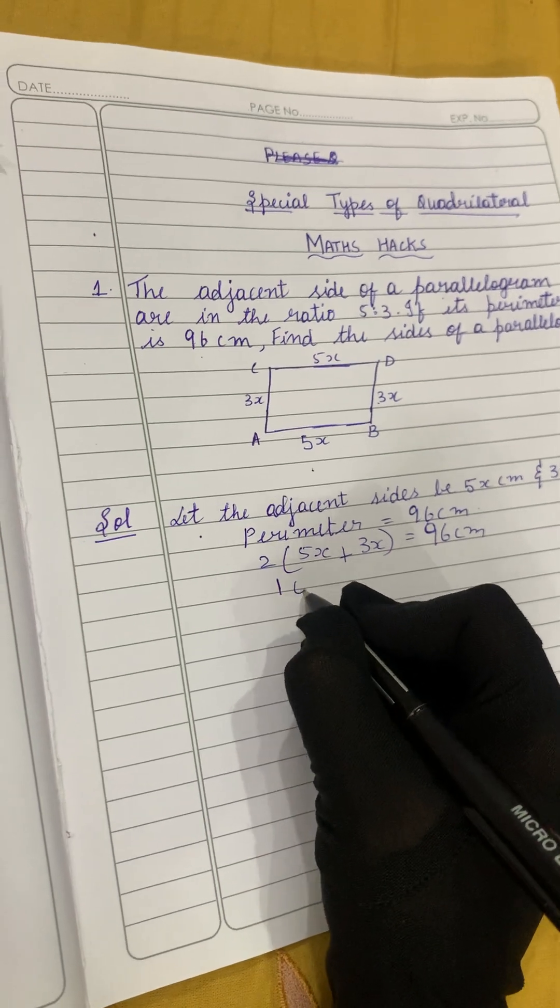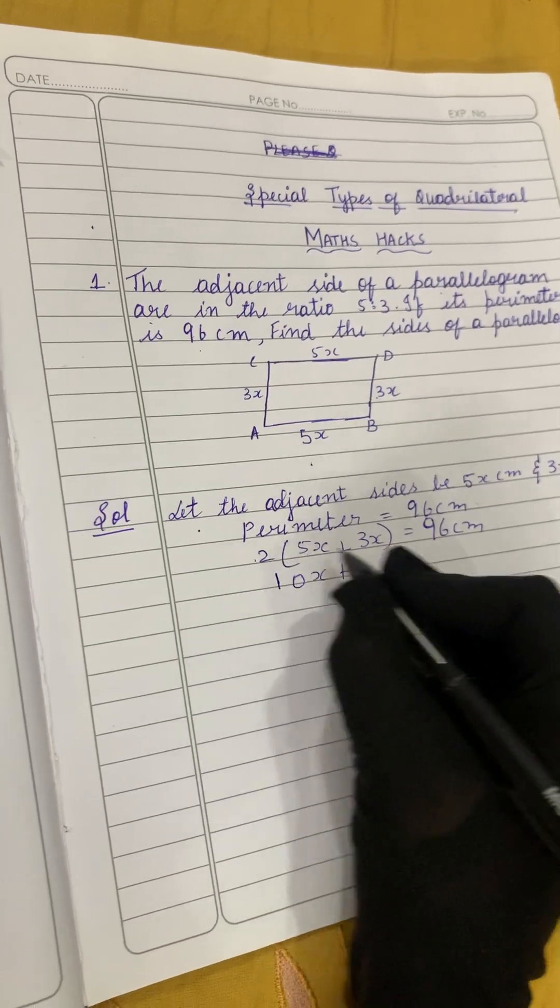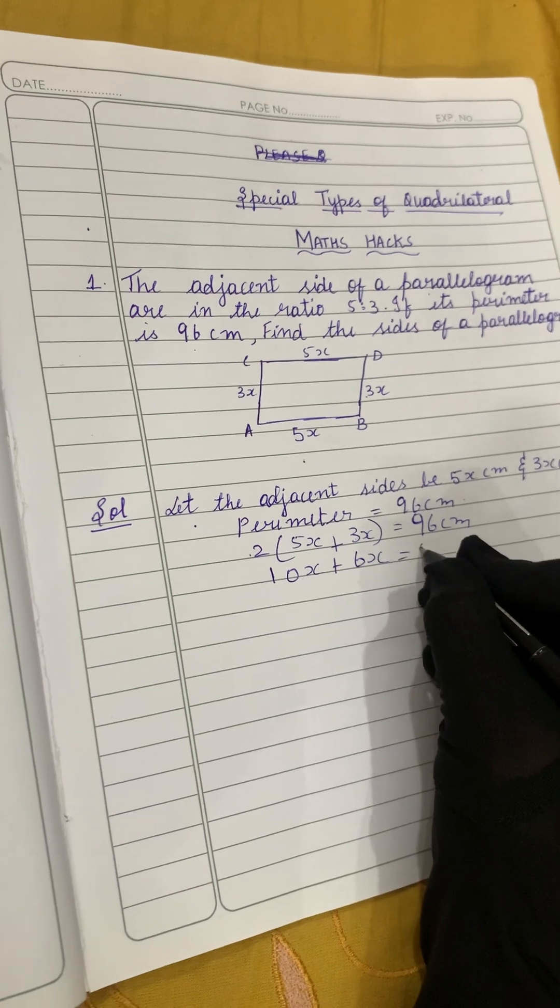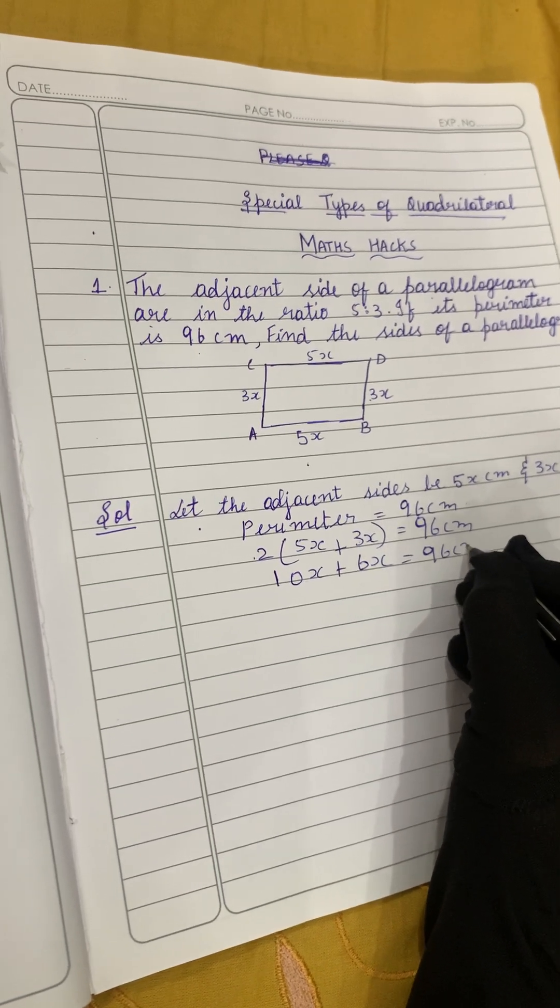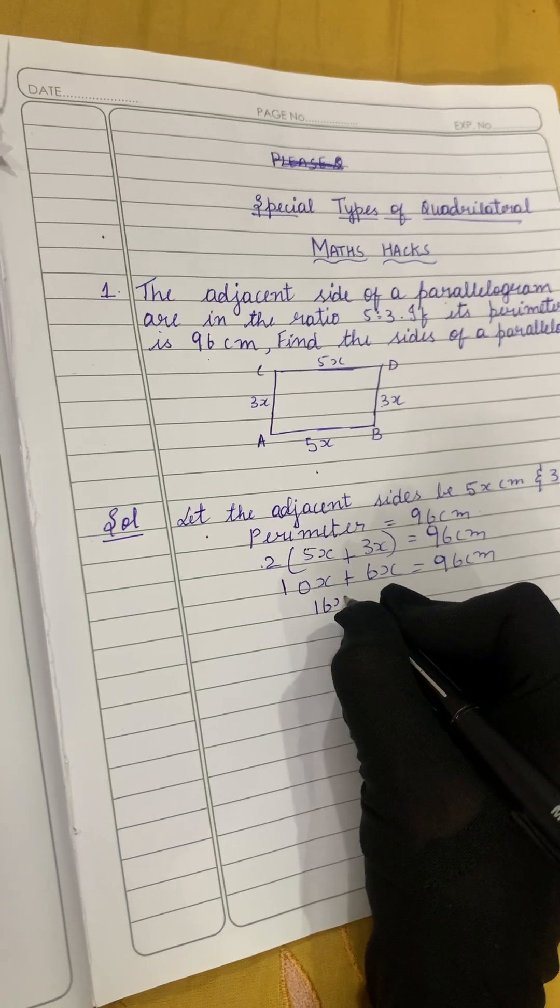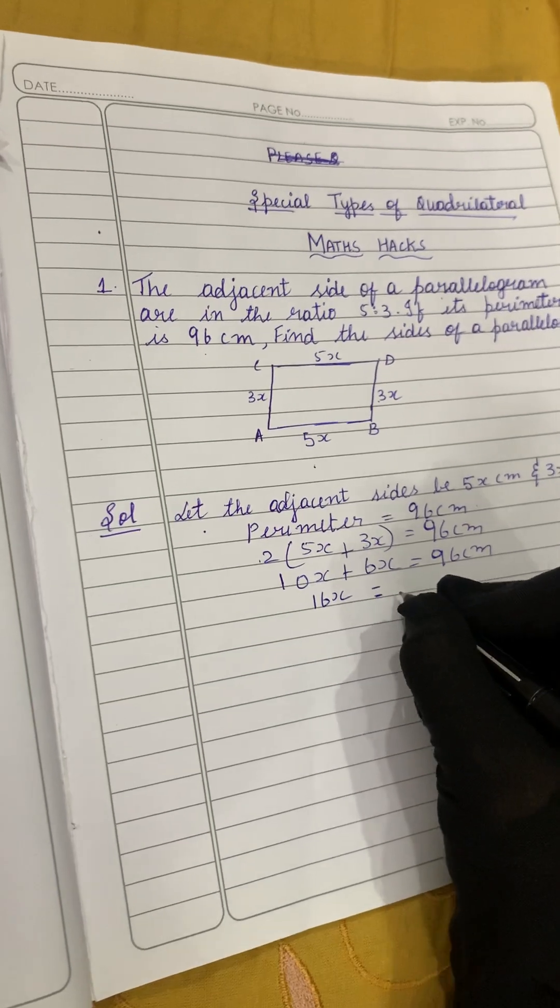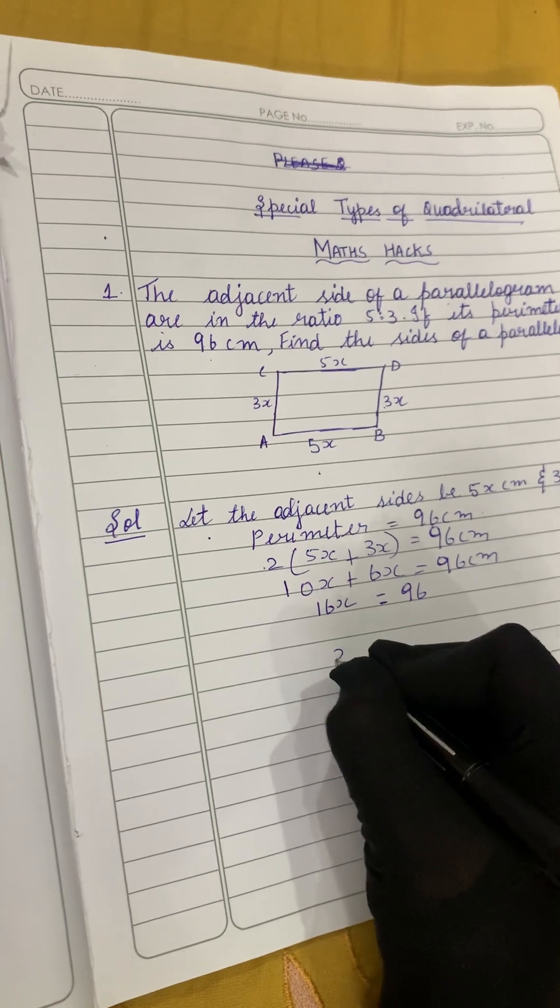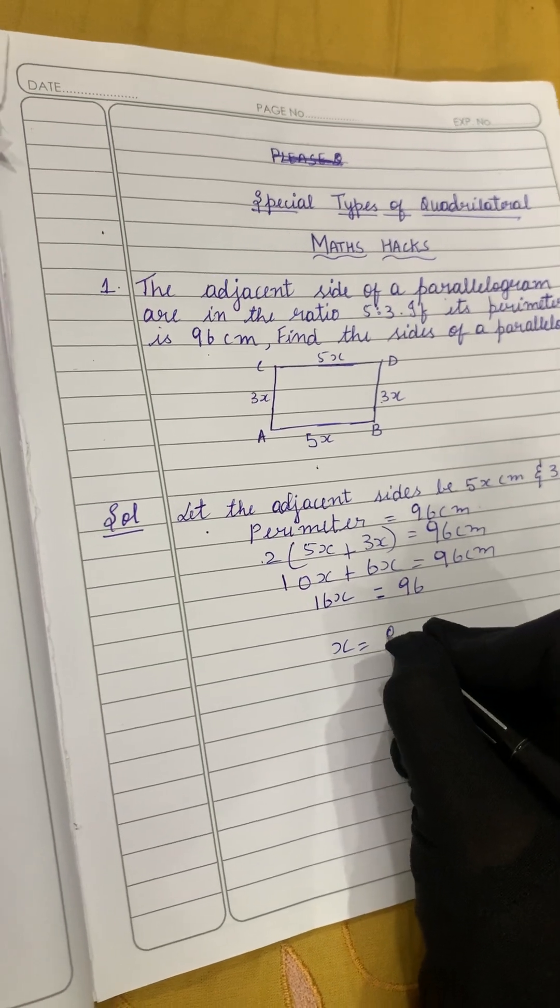So 2 into 5, 2 fives are 10, 10x plus 2 threes are 6, 6x equals 96 centimeters. 10 plus 6 gives you 16x equals 96. Now let's solve for x here.